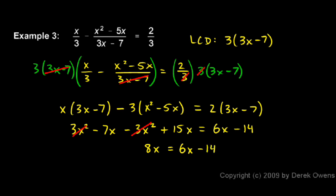And now I can subtract 6x from each side. That leaves me with a 2x on the left and a negative 14 on the right. And at that point you should be able to see that x is negative 7.